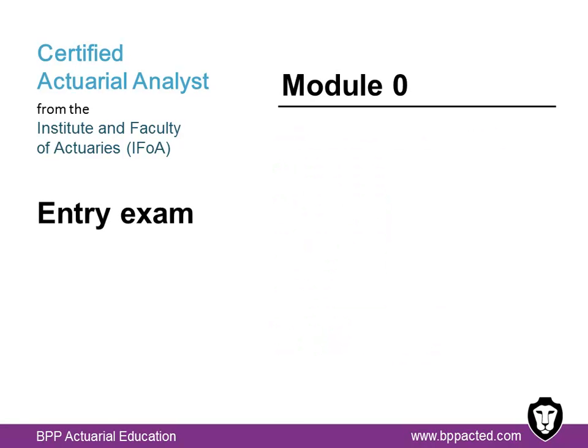Module 0 is the entry exam. You'll need to pass this before you can join the IFOA as a Student Actuarial Analyst and then proceed to take the other exams. The aim of Module 0 is to ensure that applicants have a solid grounding in mathematics and basic statistics that underpin actuarial work. It's a two-hour exam plus 15 minutes of admin time, administered by Pearson VUE, consisting of 65 multi-choice questions. You will need between 125 to 150 hours of study. The syllabus covers five topic areas.